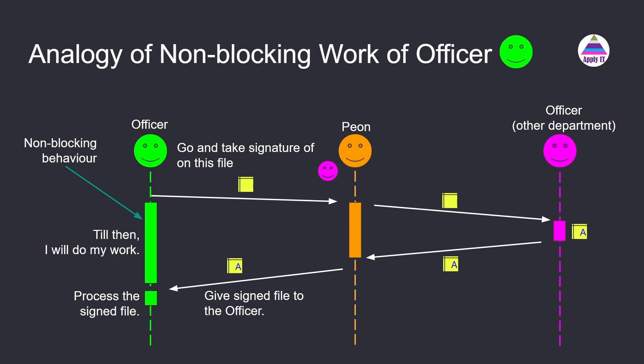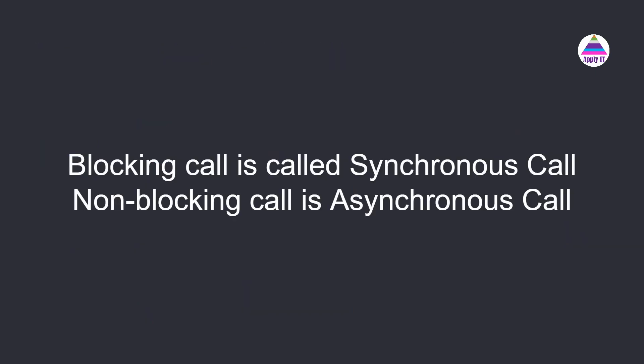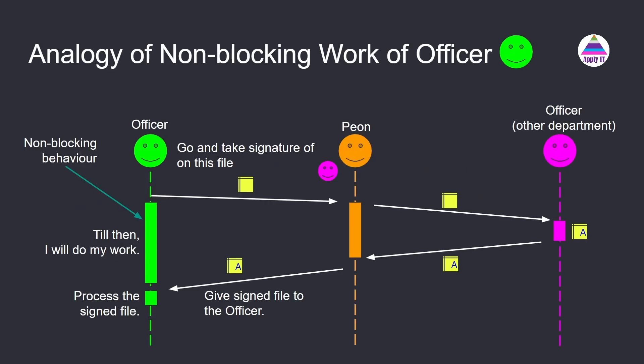Whatever APIs are available, like Fetch or Axios, they perform non-blocking calls — basically they return a promise. So blocking call is synchronous and non-blocking call is asynchronous. Asynchronous means it will happen in the background. The officer is working in front, and behind the scene the peon — which is another thread — is taking the signature on the file. This is exactly what happens when we make an API call using Fetch or Axios.